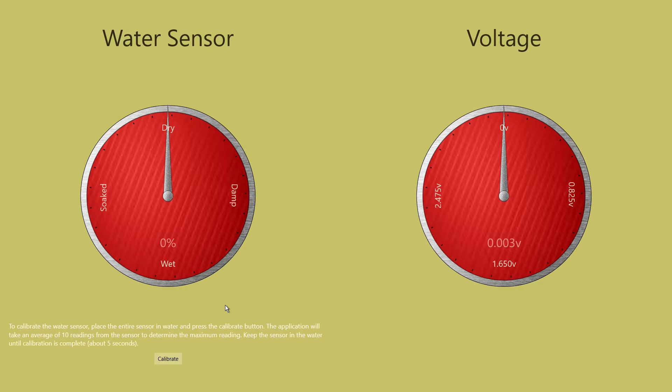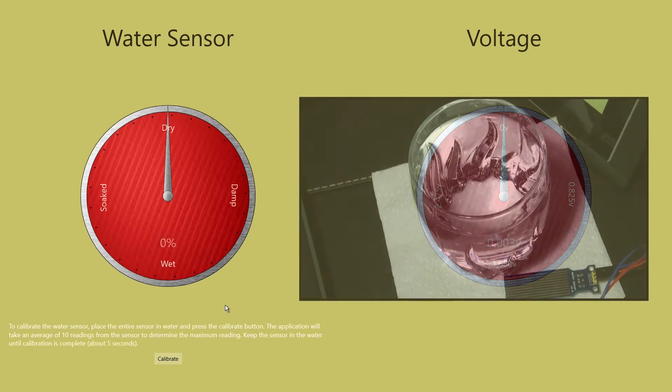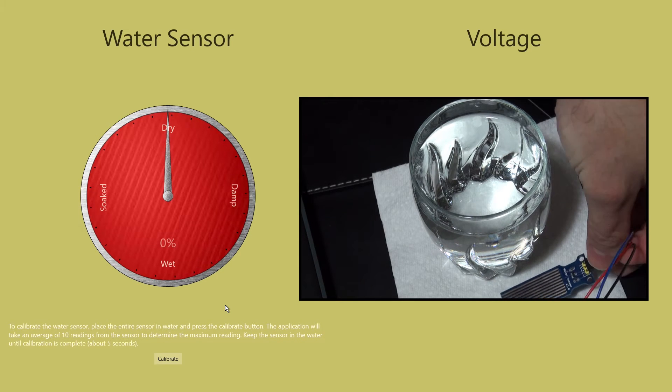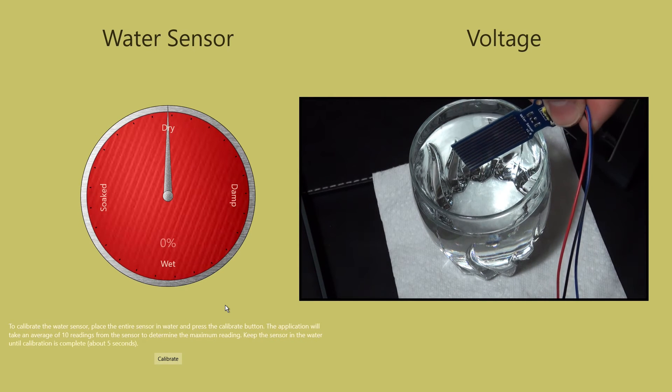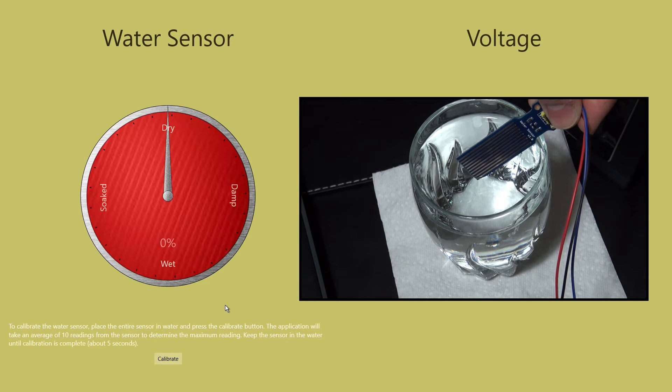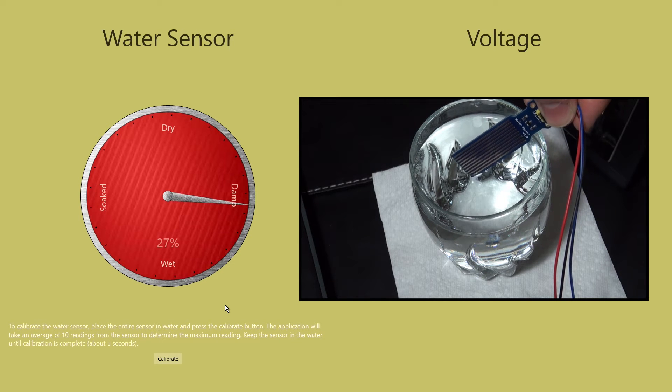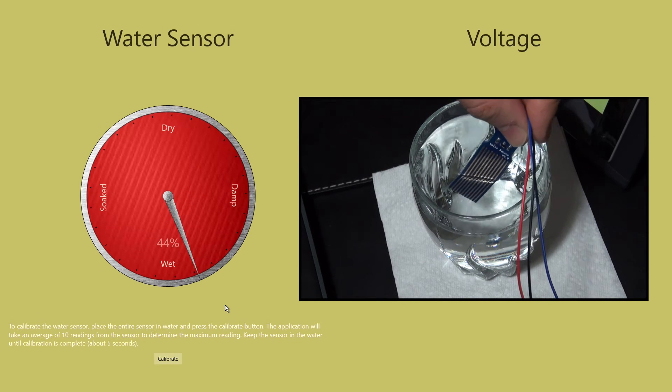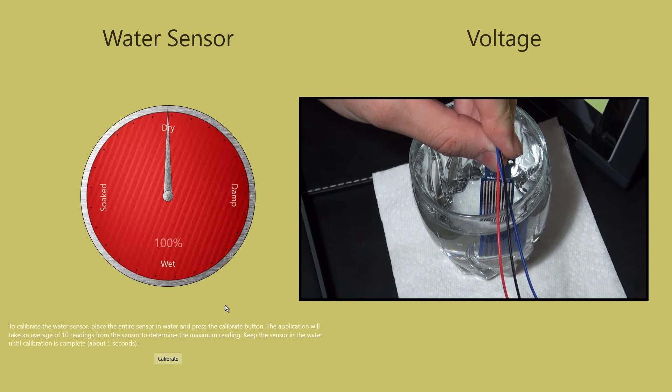Let's bring up a glass of water on the right and show you the results. Watch as I begin to place the sensor into the water. Although it is not linear, meaning that it cannot detect how much water is on it, it does provide different readings for differing amounts of water.